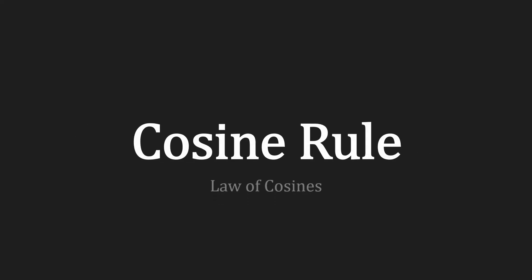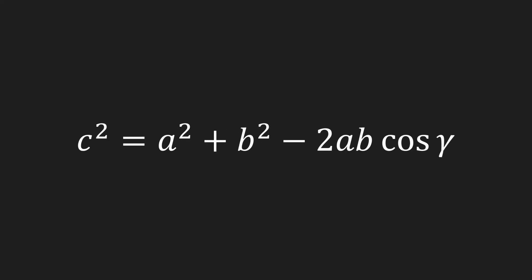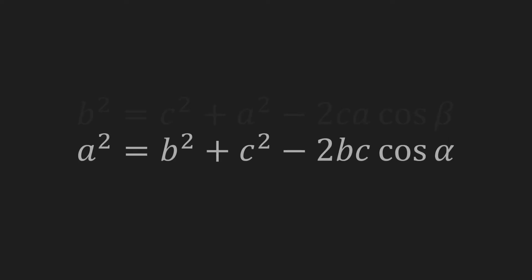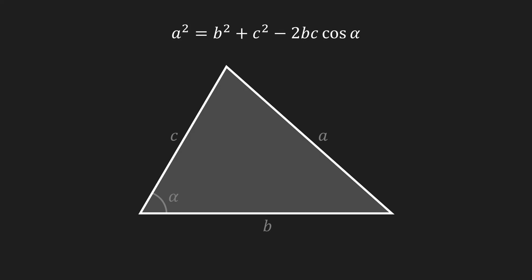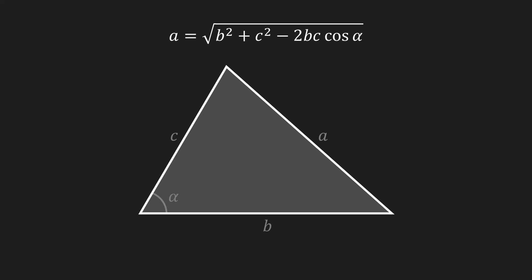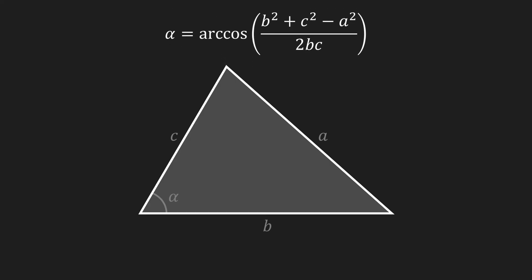All the trigonometric functions we discussed so far only apply in right-angled triangles. However there is a way to use them in non-right-angled triangles, and that is using the cosine rule, also referred to as the law of cosines. This formula is based around the angle gamma, but there also exist variants for the angles beta or alpha. So if we take a non-right-angled triangle we can use this formula to calculate either the angle of one of the corners or the length of one of the sides of the triangle.